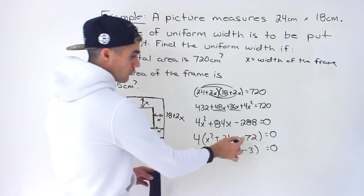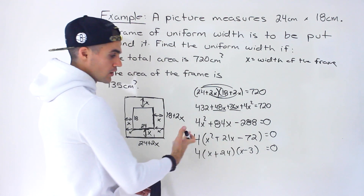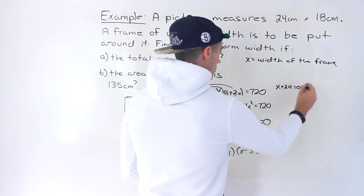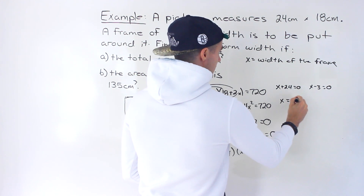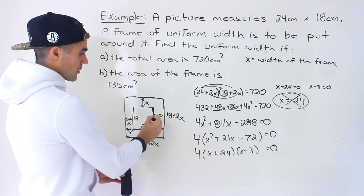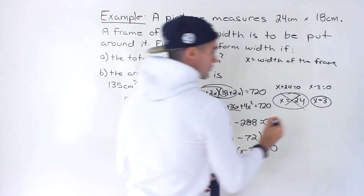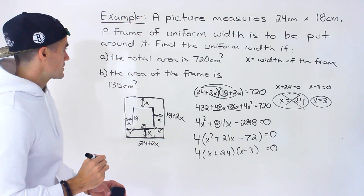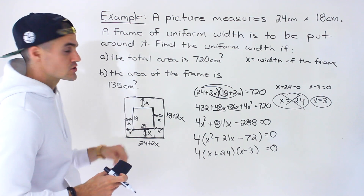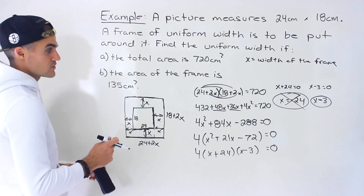Either x + 24 = 0 or x − 3 = 0. An x value of negative 24 doesn't make sense here because x represents the width of the frame, which can't be negative. So x equals 3.